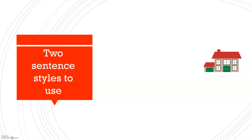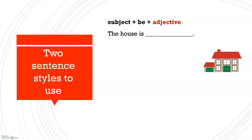With adjectives there are two general sentence styles we can use. The first one is the most common, the most basic, where you use the subject plus the be verb plus the adjective. So it looks something like this: 'The house is something.' For example: The house is large. The house is nice. The house is expensive. It's the most common English sentence structure — subject, verb, object.